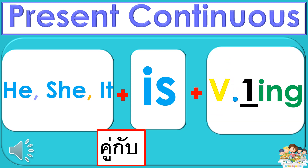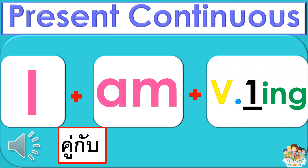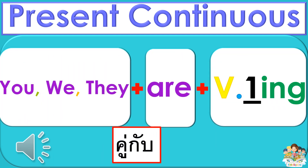He, she, it คู่กับ is + Verb ช่องที่หนึ่ง + ing. I คู่กับ am + Verb ช่องที่หนึ่ง + ing. You, we, they คู่กับ are + Verb ช่องที่หนึ่ง + ing.